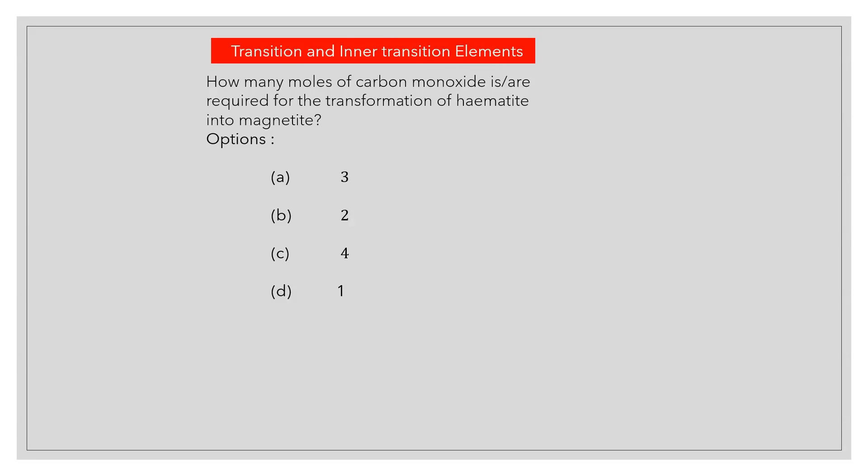How many moles of carbon monoxide are required for the transformation of hematite into magnetite? Answer D: 1.